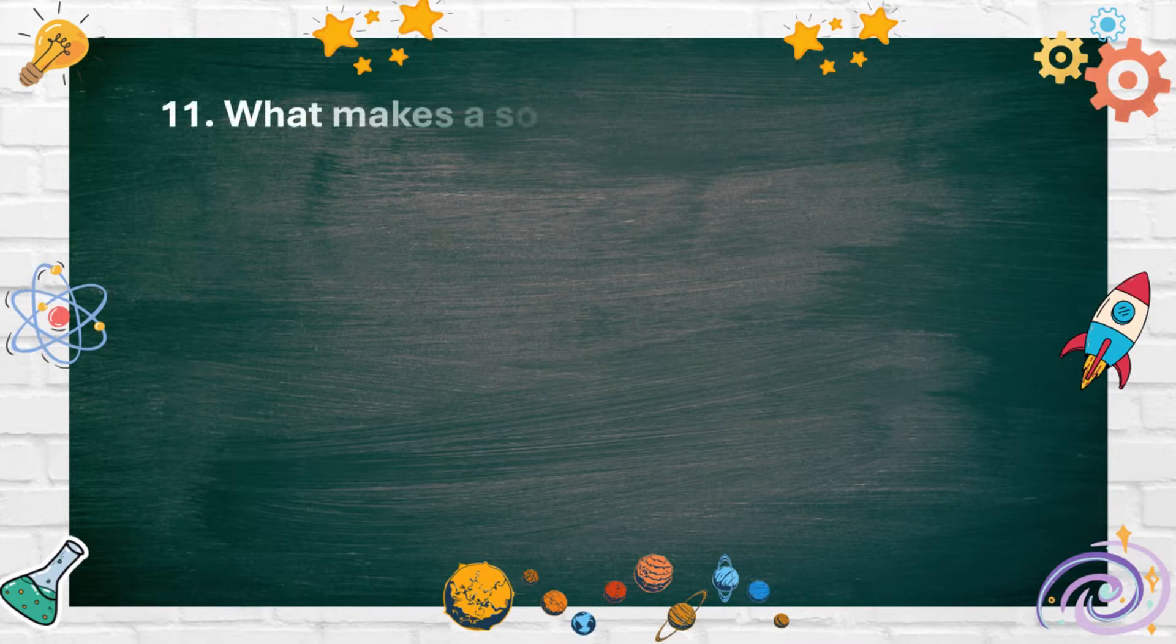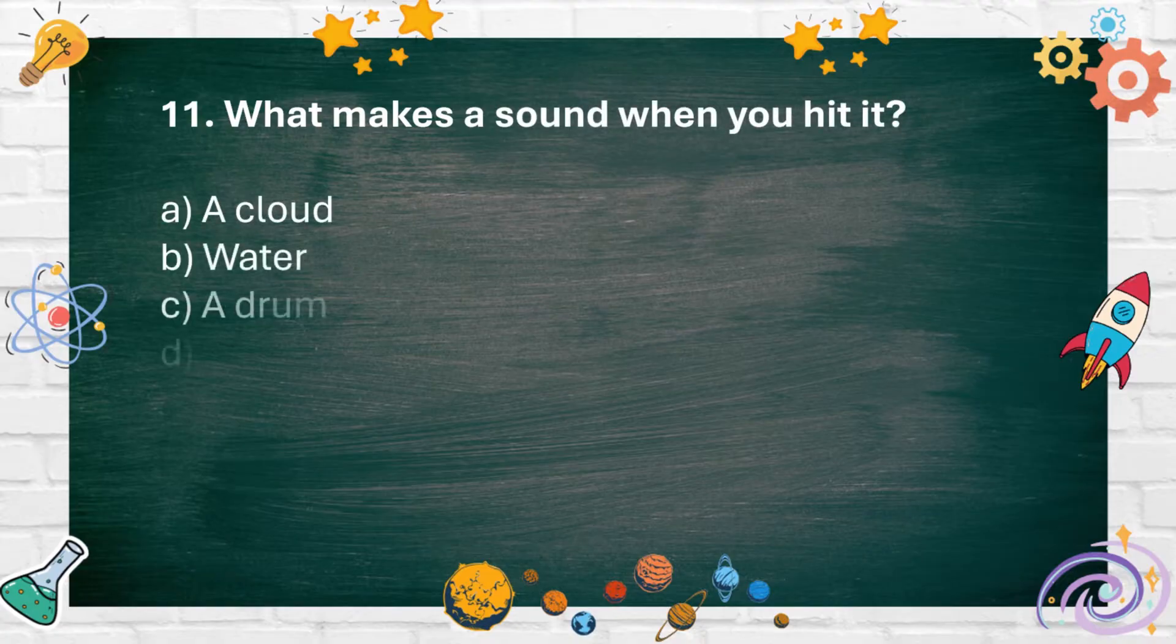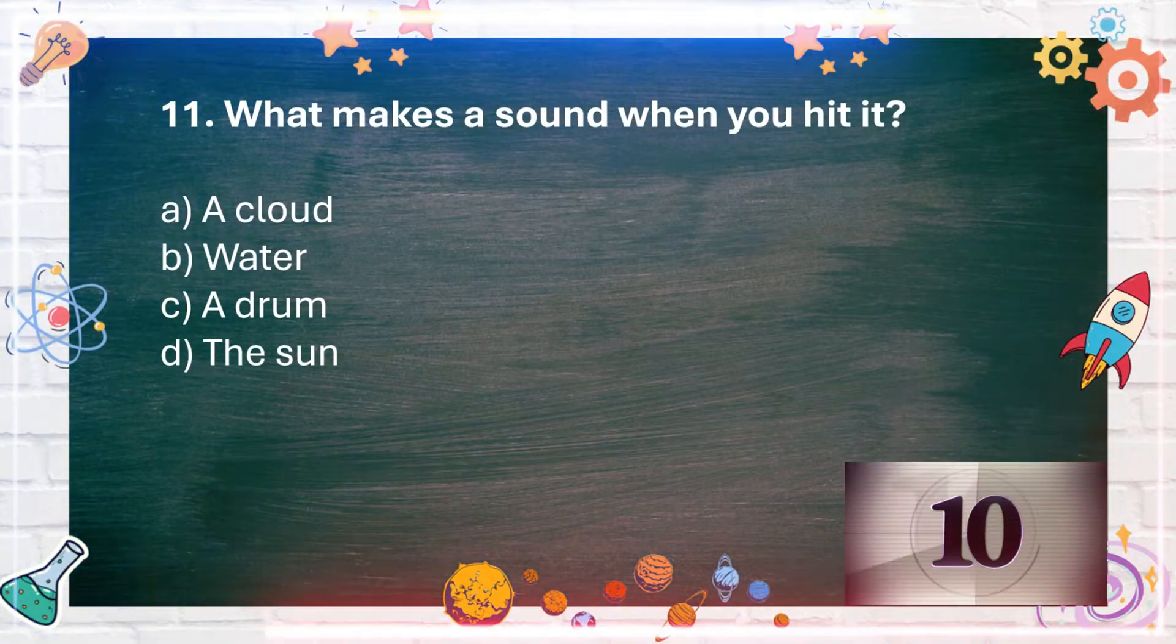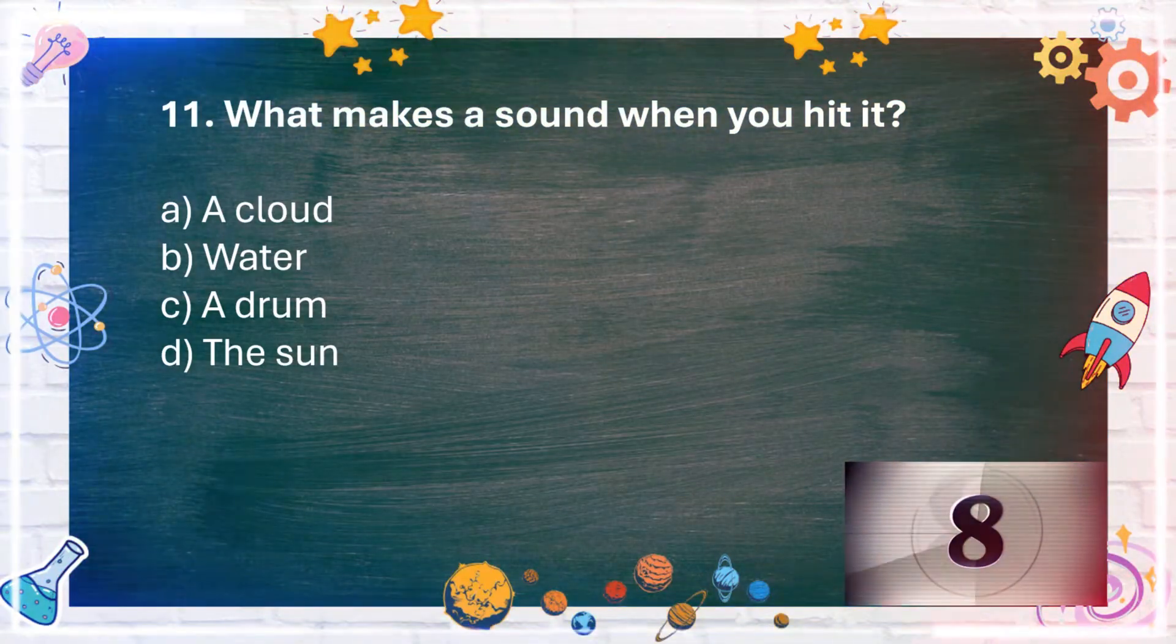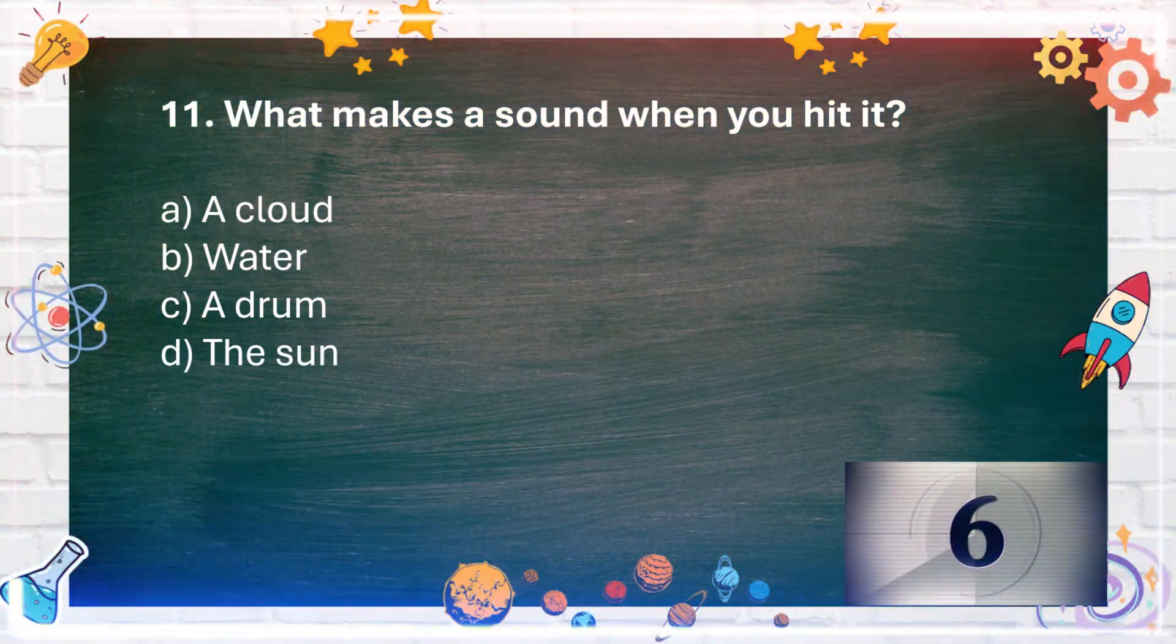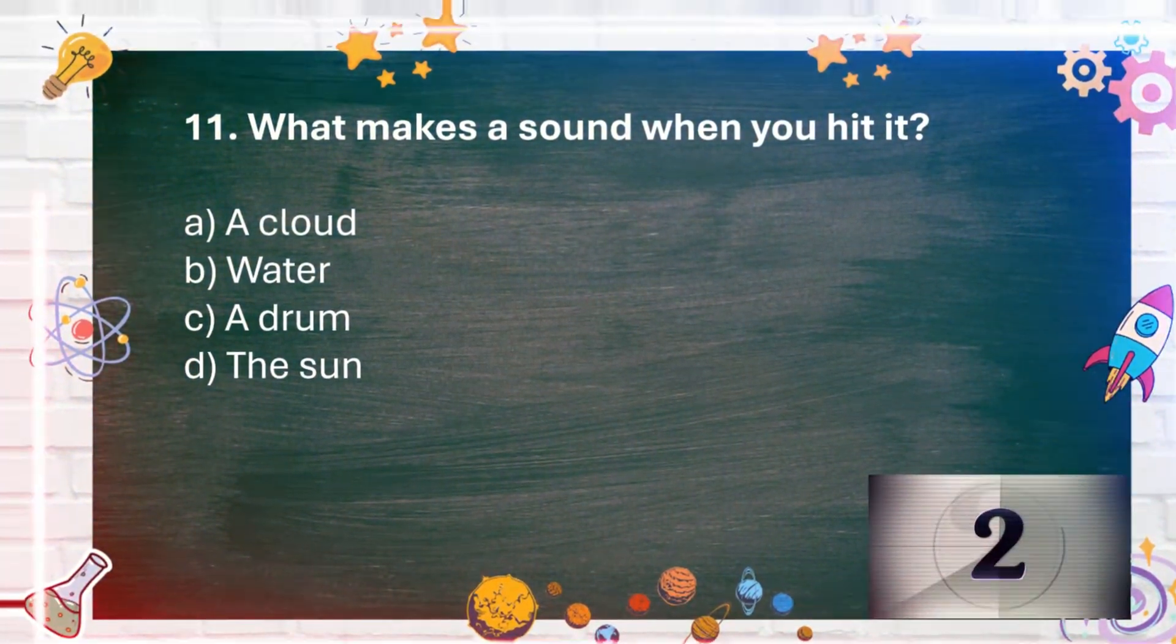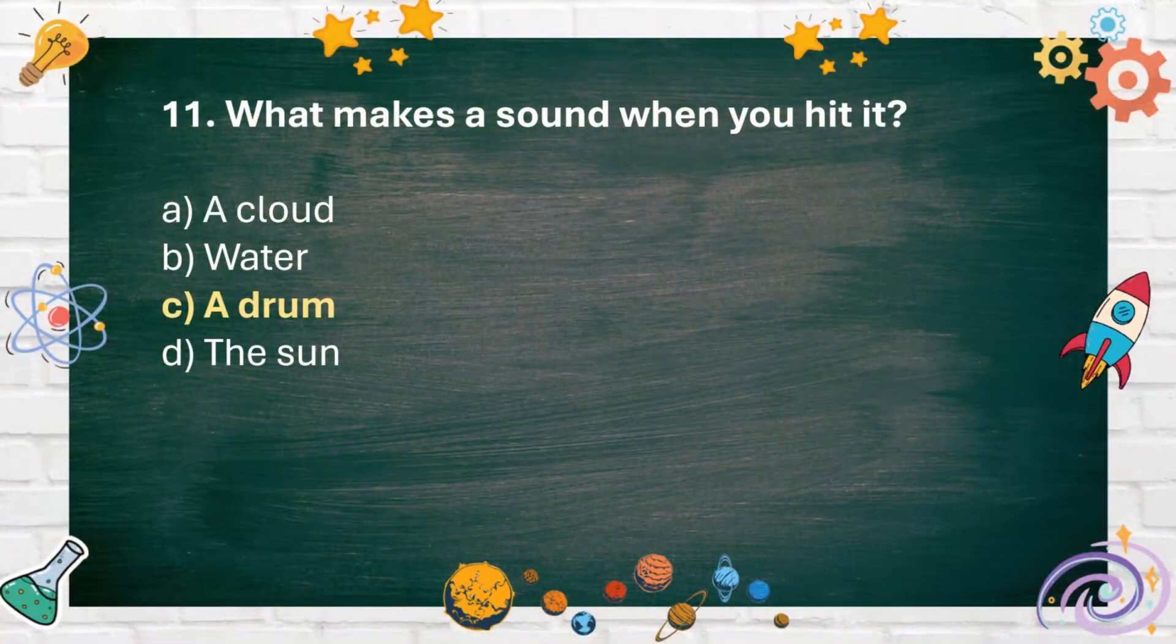Number 11. What makes a sound when you hit it? A. A cloud B. Water C. A drum D. The sun. The answer is C. A drum.